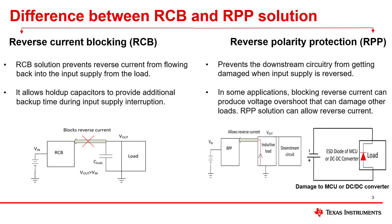This slide discusses reverse current blocking and reverse polarity protection in more detail. For RCB, consider the case when output voltage becomes higher than input. This causes reverse current flow and can cause damage to upstream circuitry or reduce battery life. An RCB solution prevents this reverse current flow and also helps in extending backup time of holdup cap in critical applications. Reverse polarity protection need arises in situations like field miswiring in PLCs or during reverse connection of a car battery. An RPP solution prevents the downstream load such as MCU or DC-DC converter from being damaged. RPP solution can allow reverse current in applications where the load is inductive, because blocking reverse current through an inductive load can cause voltage overshoot on the output side that can damage other downstream circuitry.